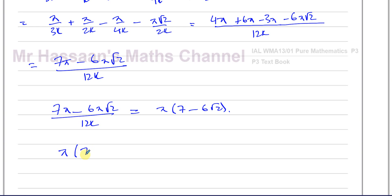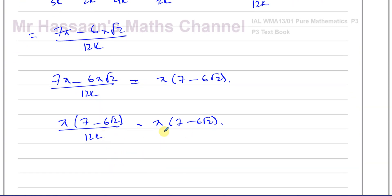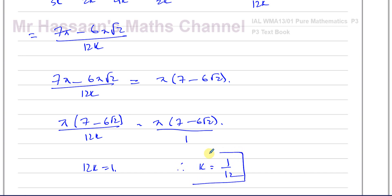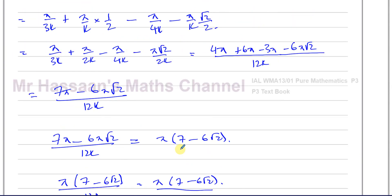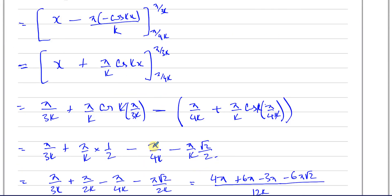We know this must equal pi times 7 minus 6 root 2. Since the numerators are identical — both are pi times 7 minus 6 root 2 — the denominator 12k must equal 1. Therefore k equals 1 over 12. That's the answer for k in this question — it's just a matter of integrating and manipulating algebraically.